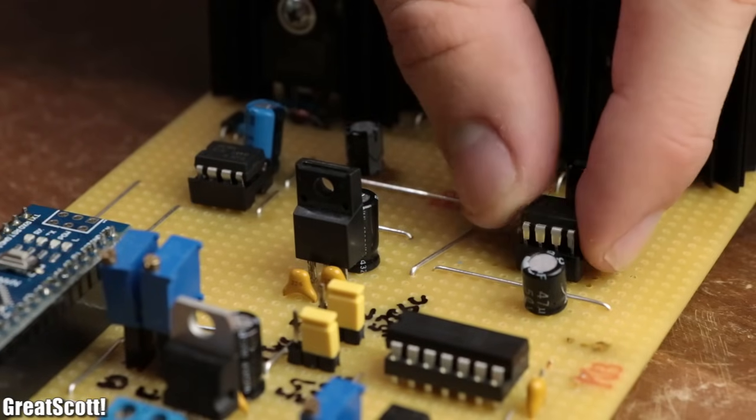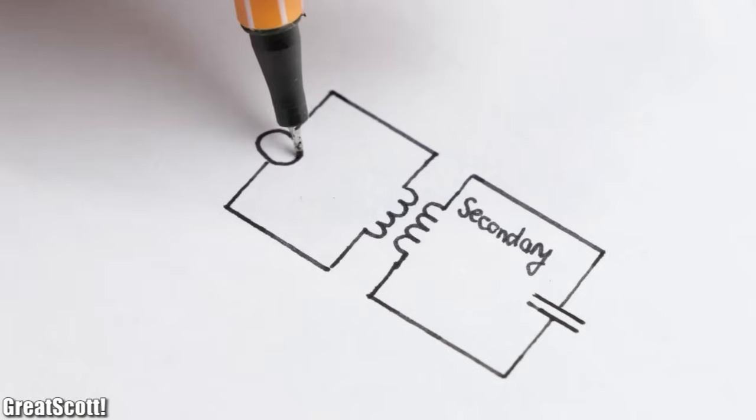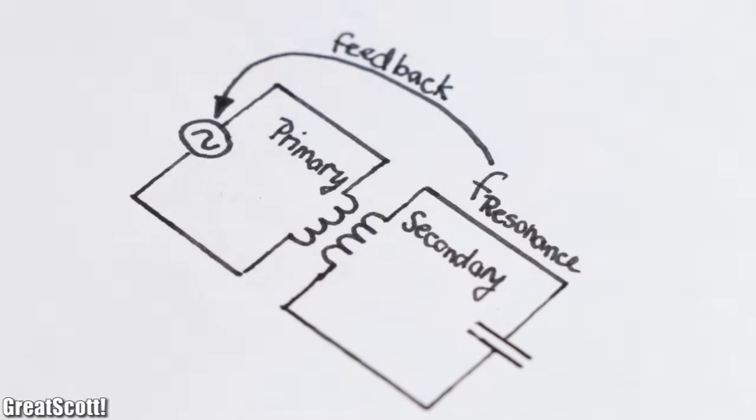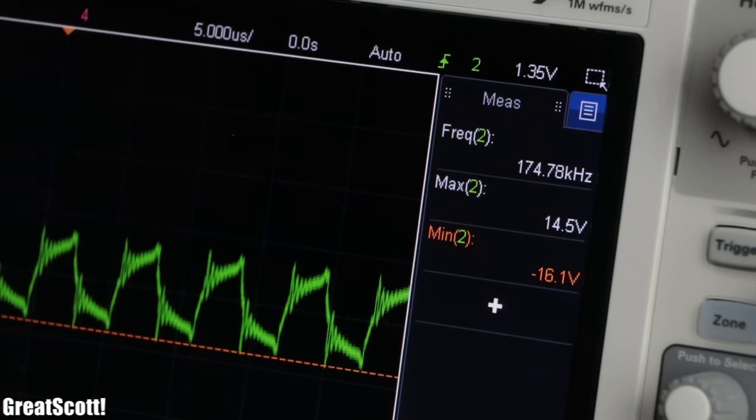Afterwards it was time to solve the last problem: creating a feedback system which keeps the primary coil voltage at the resonance frequency of the secondary instead of having a fixed oscillation frequency.